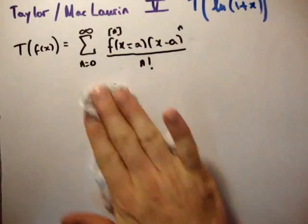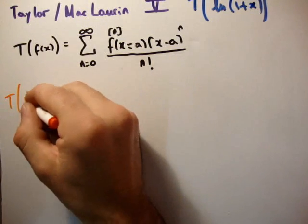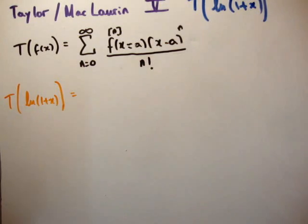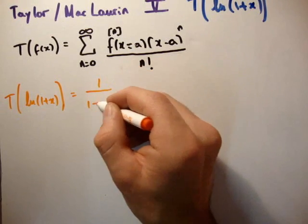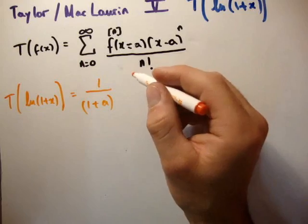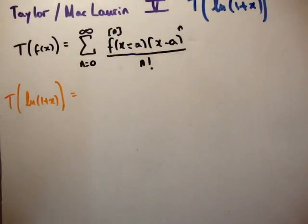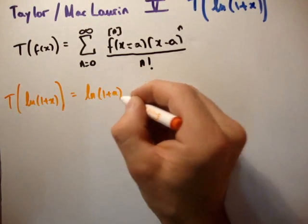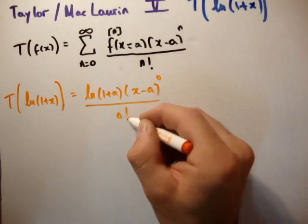So now that we've gotten that, we're ready to evaluate our Taylor series. So the Taylor series of the natural logarithm of 1 plus x is equal to the following. It's equal to 1 over 1 plus a. Oh, what am I doing? No, that's completely incorrect. So we start off with the natural logarithm of 1 plus a times (x minus a) to the 0 divided by 0 factorial, which is 1.